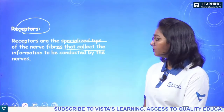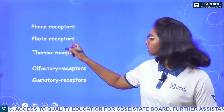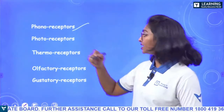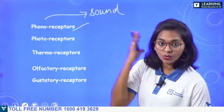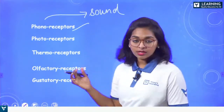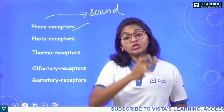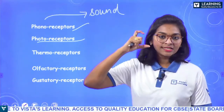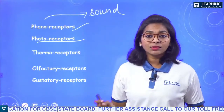We have five different classifications of receptors. Starting with phonoreceptors — 'phone' relates to sound, so these are nerve endings in the ears that respond to sound waves. Second, photoreceptors — 'photo' means light, just like in photosynthesis, so photoreceptors detect light.